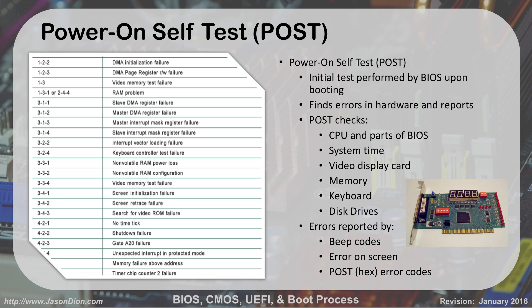When you turn on the computer, the first thing it does is the Power-On Self-Test. It performs initial tests and finds errors in your hardware and reports them. This does basic checks on your CPU, processor, different parts of the BIOS, system time, video display, memory, keyboard, and disk drives. Once it does that, it reports the results in three different ways. It can do a beep code — you'll hear the speaker make beeps. For example, beep-beep-beep, beep, beep-beep, that would be 3-1-2, and looking at a chart under 3-1-2 it would say master DMA register failed. There are no standard beep codes; it's all based on your manufacturer, so you've got to check their beep codes for their specific manufacturer.